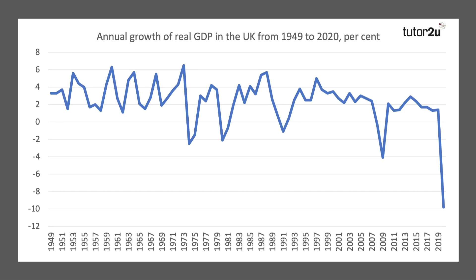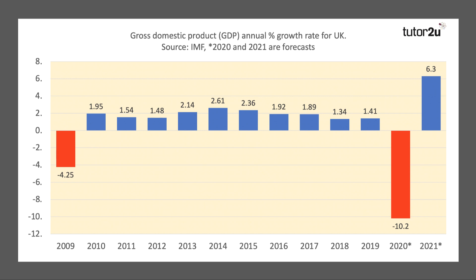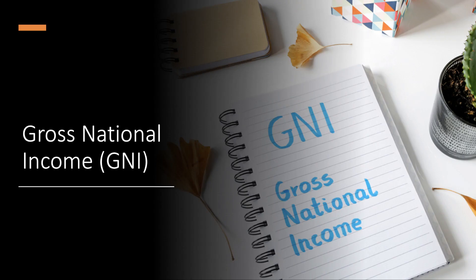Real GDP can then be used as a measure of economic growth. Here's the annual growth of GDP in real terms for the UK from 1949 through to 2020 — about 70 years of data. You can see the economic cycles, the recessions, and crucially the depth of the pandemic's impact: a loss of 10% of GDP in the UK in 2020, with a fairly sharp recovery expected after the global financial crisis of 2009 and a decade of slow but positive growth.